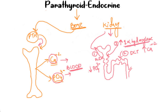So on the kidney, PTH has three jobs: first, act on the PCT and decrease reabsorption of phosphate; second, act on the DCT and increase reabsorption of calcium; third, act on the PCT again and increase the expression of 1-alpha-hydroxylase enzyme.